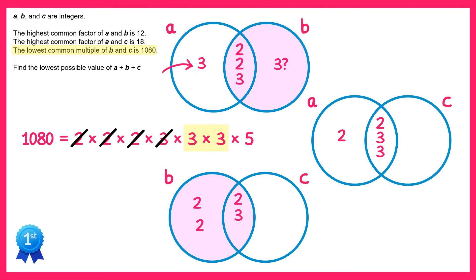So the 3's can't go inside the B circle, so they must both go inside the C circle. Now we're nearly there.